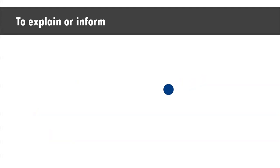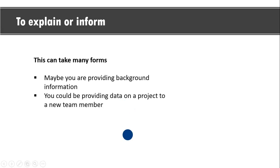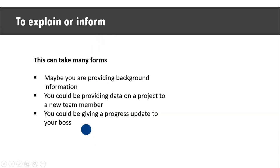If you want to explain or inform, it could take various forms. Maybe you're giving some background information, or maybe you're providing some data on a project to a new team member, or you could be giving a progress update to your boss. These are just two or three categories — there could be many more forms your email or communication could take.